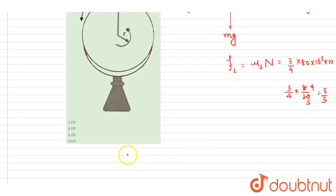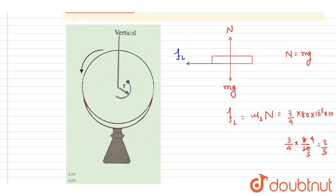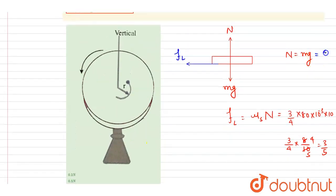Now if you see the normal reaction will be acting in upward direction. Normal reaction is equals to mg. You could see it is 4 by 5, we already calculated.